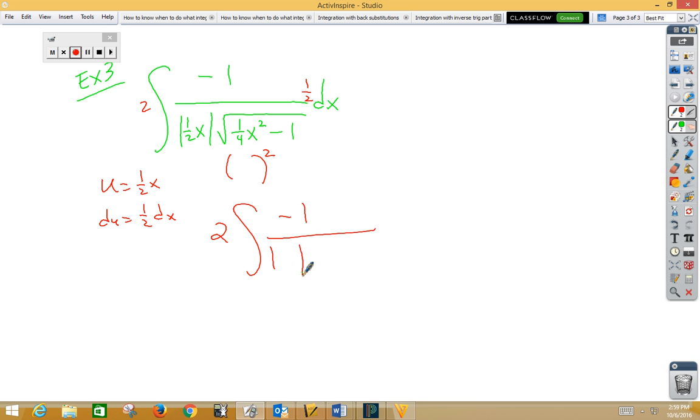now, here's the tricky part. We've got u is one-fourth x, and that's a one-fourth x. So, we have a u there, root u squared minus 1 du. Well, that would be inverse cosecant. So, we have 2 inverse cosecant of one-half x plus c.